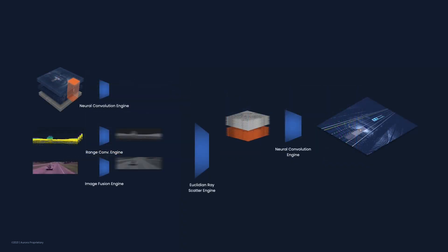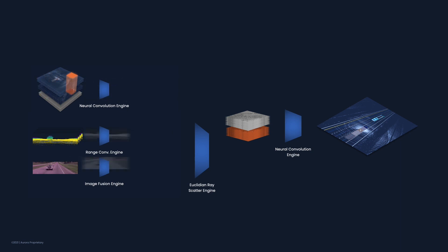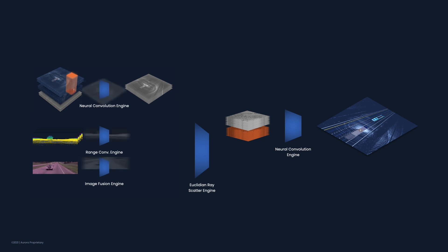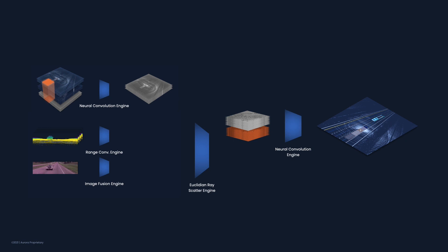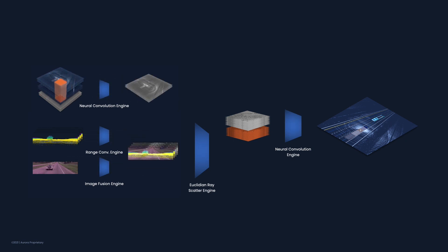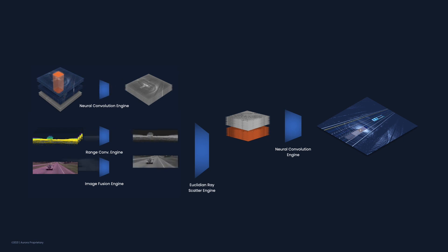At this point, feature maps from all sensor modalities are in the Euclidean tensor view. They can now all be stacked together and again processed by a neural convolution engine to produce high-quality 3D detections. The detections include properties of the object such as velocity, width, height, length, category, and uncertainties on position for each detection. This creates a representation of the world around us that is rich in data derived from various sensor inputs.